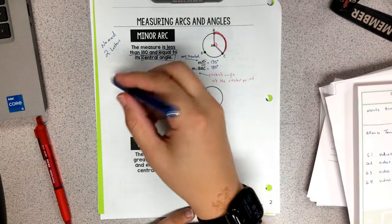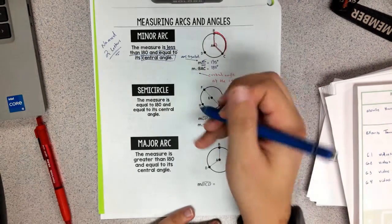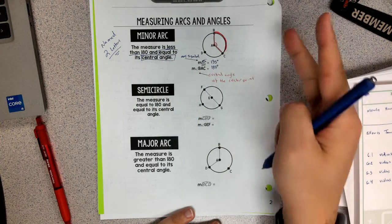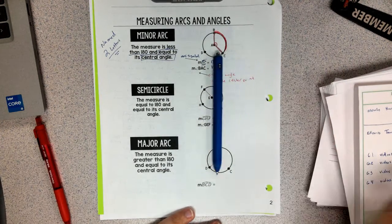Now remember, this is the key: in naming minor arcs, use two letters. Highlight.